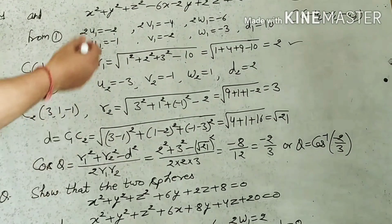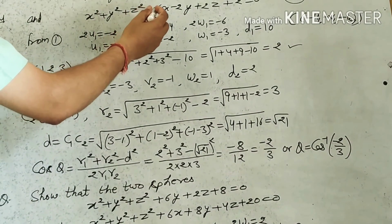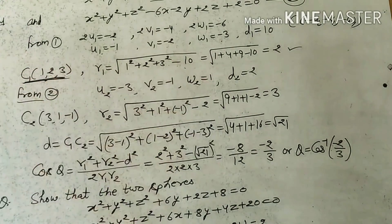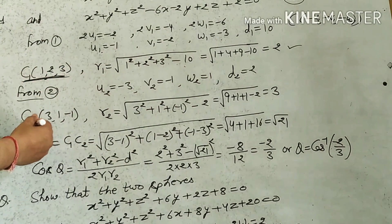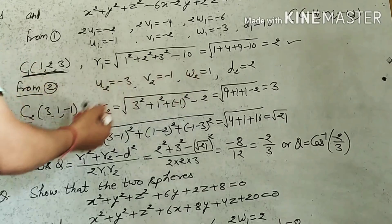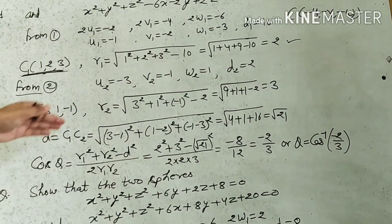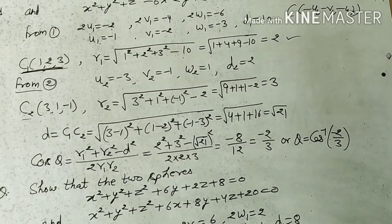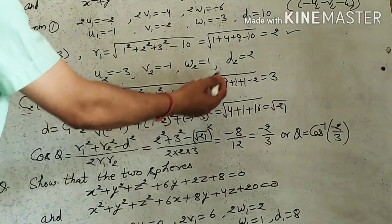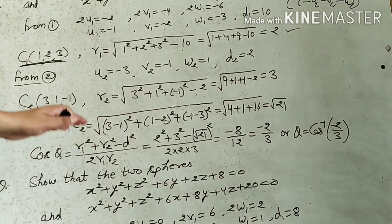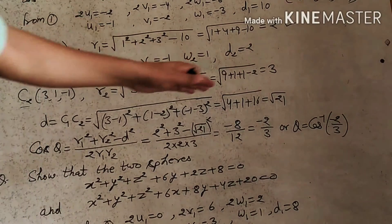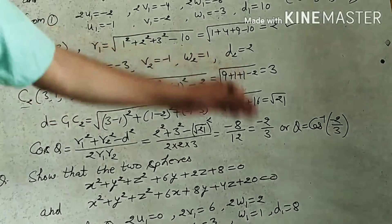From the 2nd sphere: 2U2 = −6 so U2 = −3; V2 = −1; W2 = 1; D2 = 2. The center of the 2nd sphere is (−U2, −V2, −W2) = (3, 1, −1). The radius R2 = √(3² + 1² + (−1)² − 2) = √(9 + 1 + 1 − 2) = √9 = 3. So the radius of the 2nd sphere is 3.